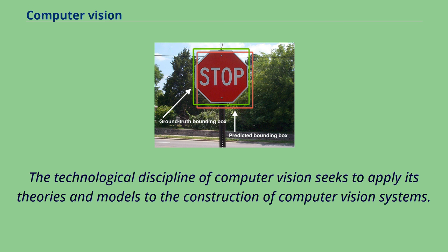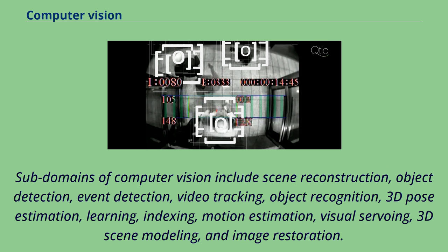The technological discipline of computer vision seeks to apply its theories and models to the construction of computer vision systems. Subdomains of computer vision include scene reconstruction, object detection, event detection, video tracking, object recognition, 3D pose estimation, learning, indexing, motion estimation, visual servoing, 3D scene modeling, and image restoration.